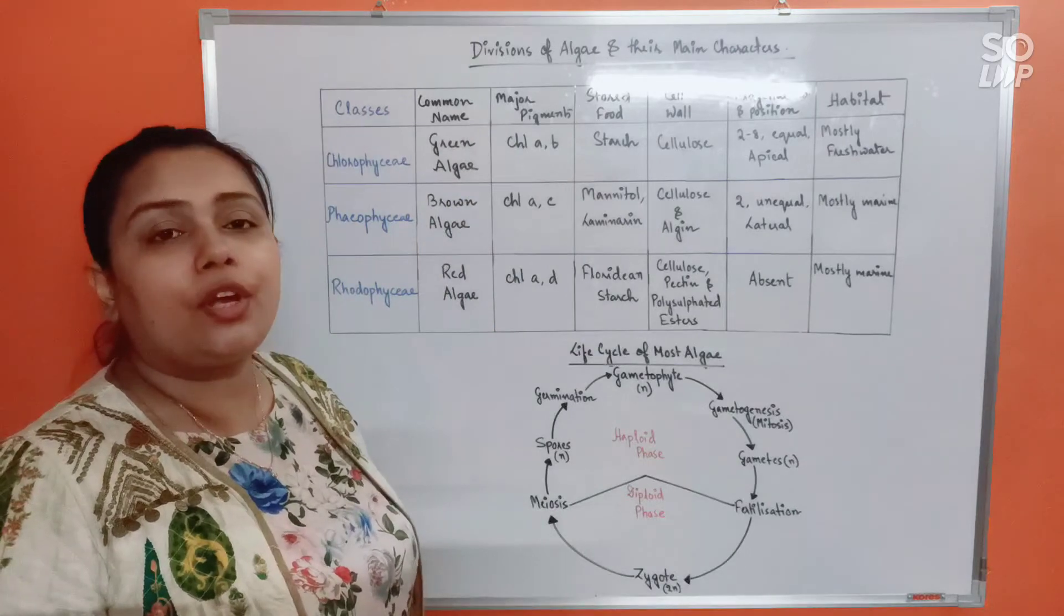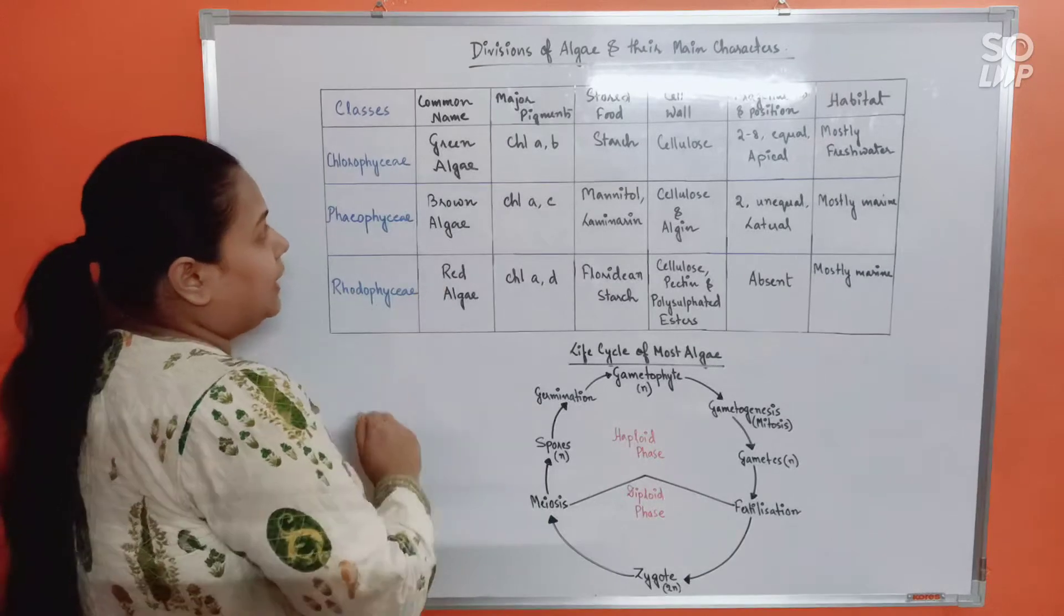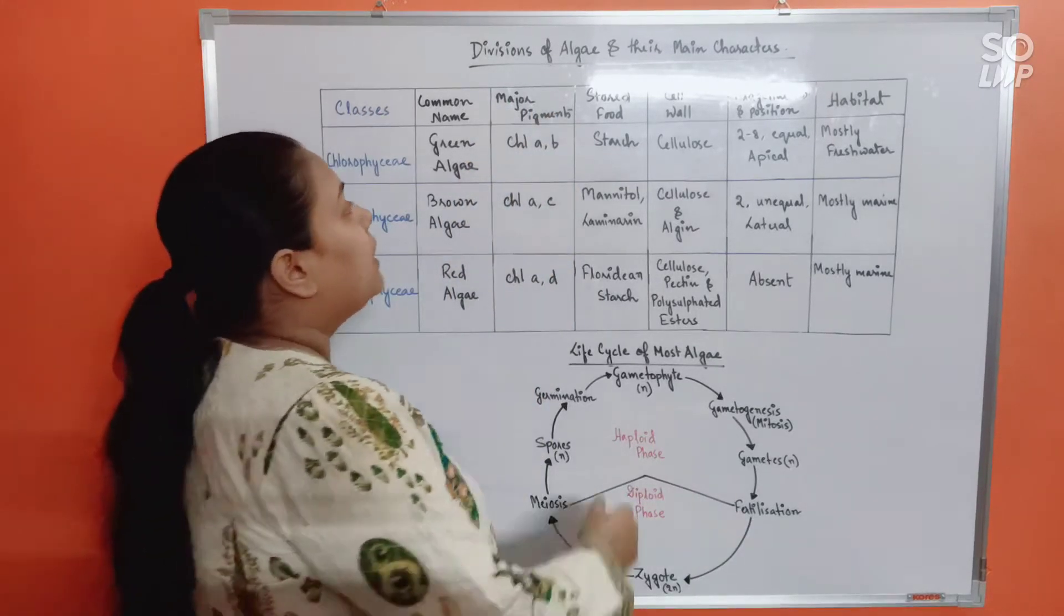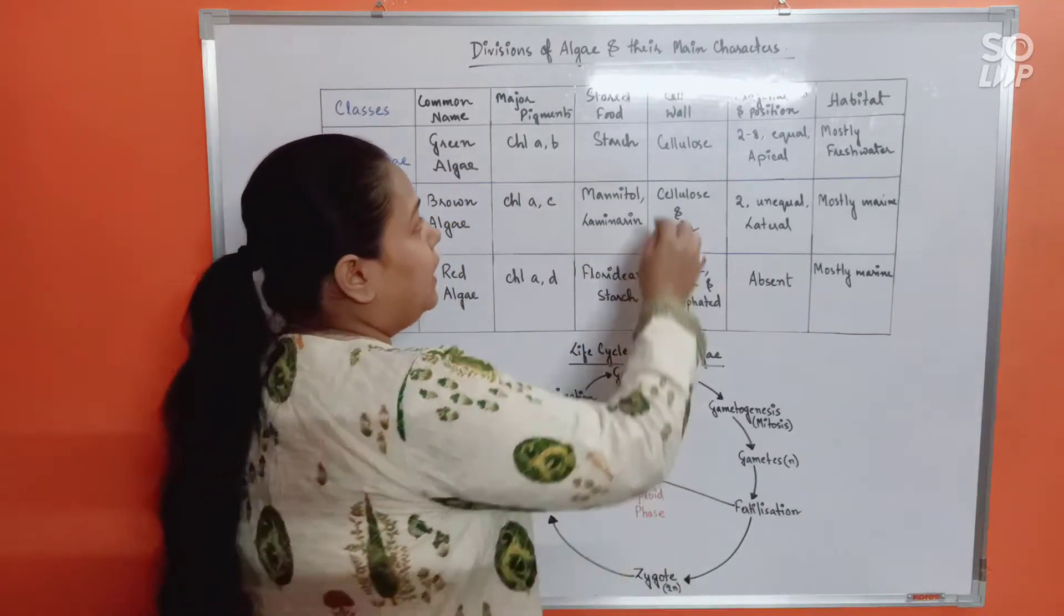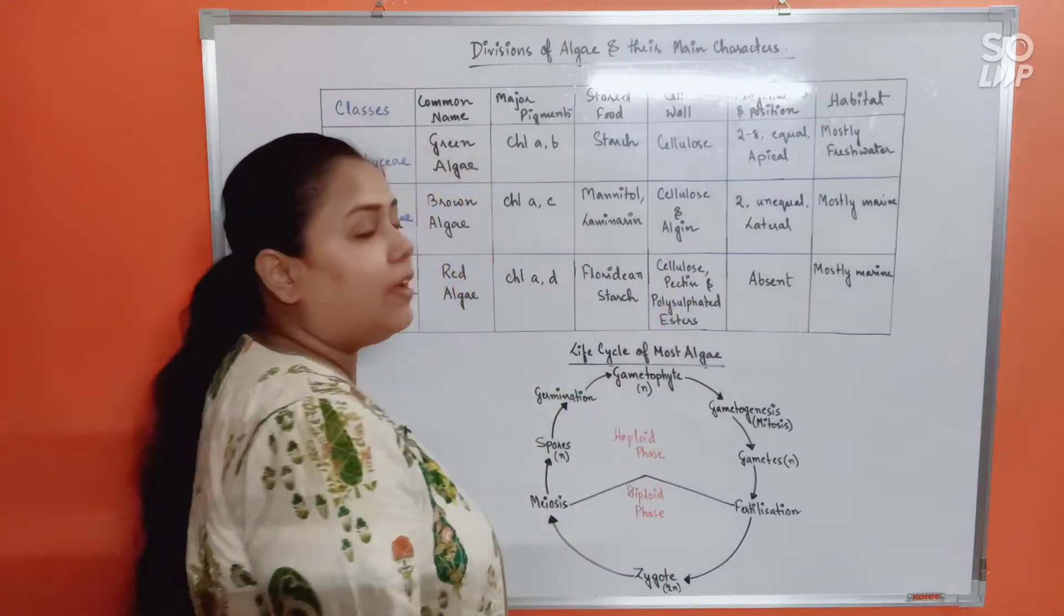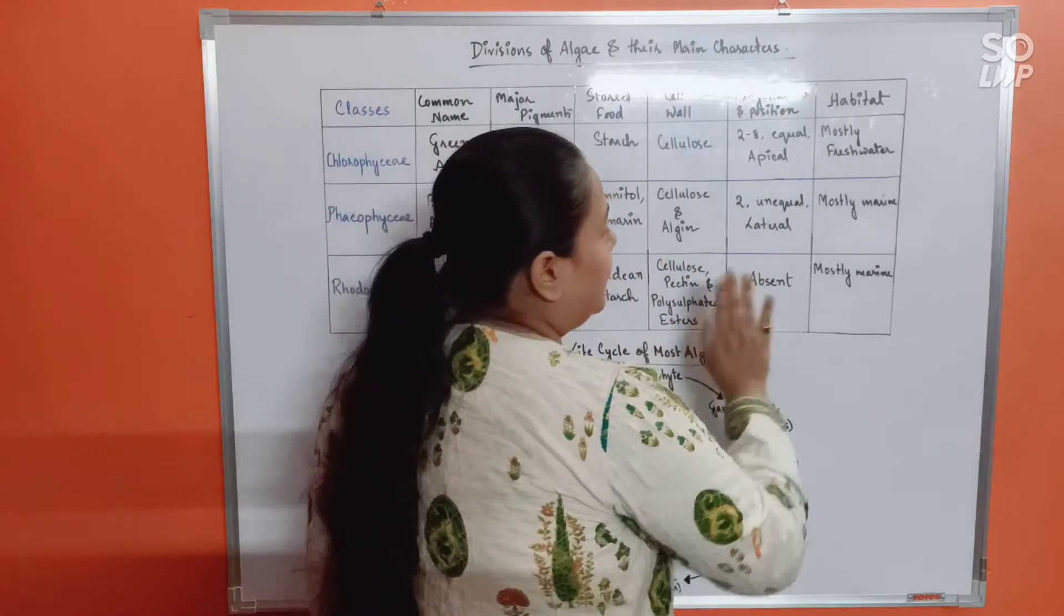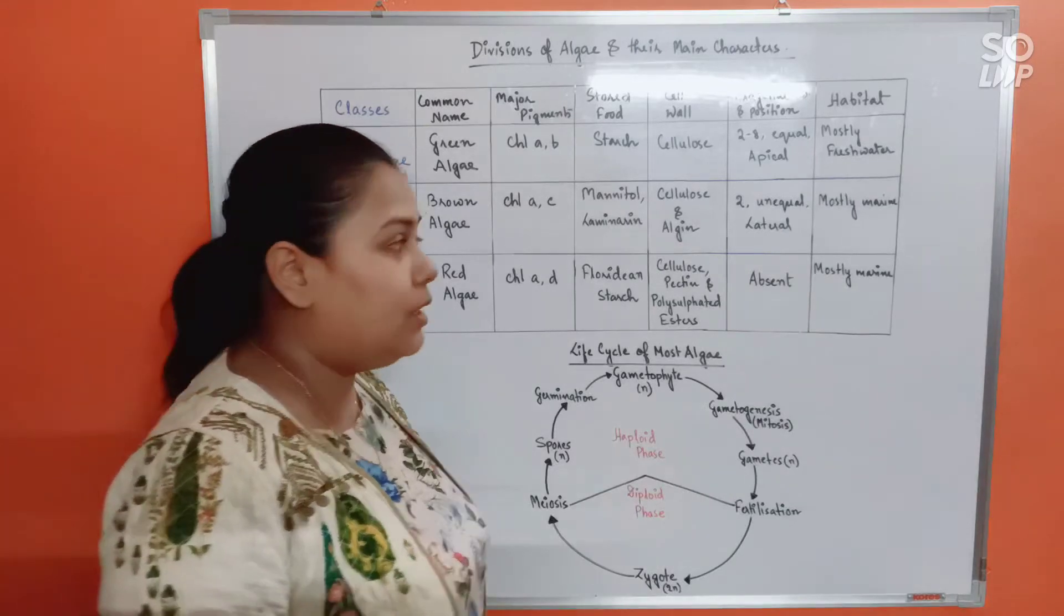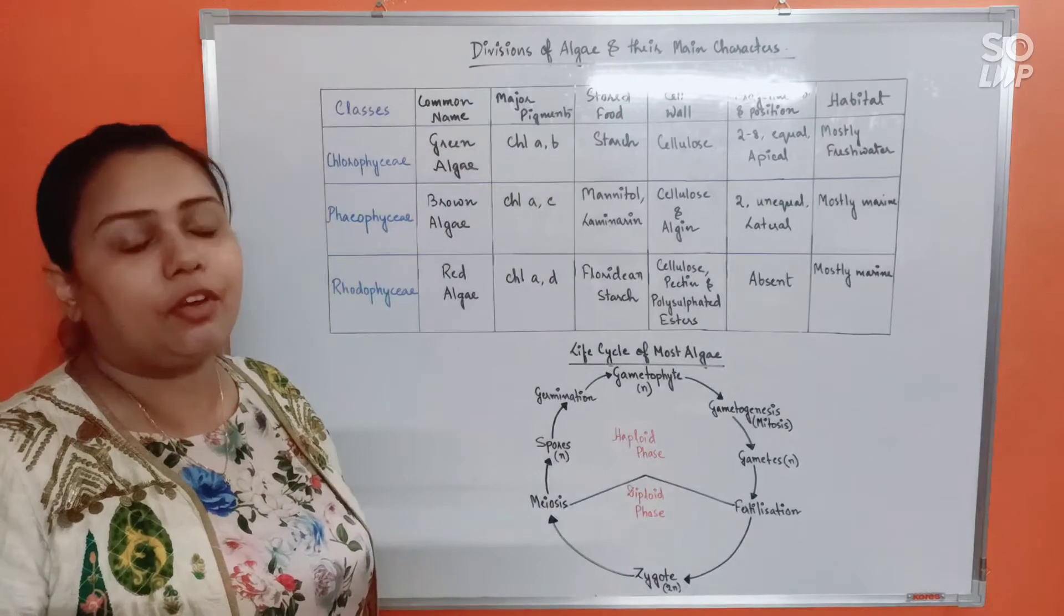Rhodophyceae, on the other hand, red algae. The major pigments will be chlorophyll a and d. Stored food is floridian starch, which is similar to glycogen or amylopectin. Cell wall is made up of cellulose, pectin, and polysulfated esters. Flagella number and position - here, completely flagella would be absent. If you remember, in the life cycle, motile structures are absent. And habitat-wise, again, they are mostly marine, rarely freshwater.